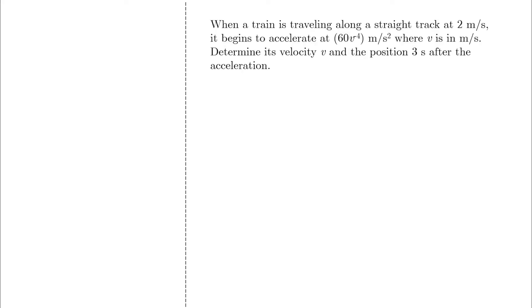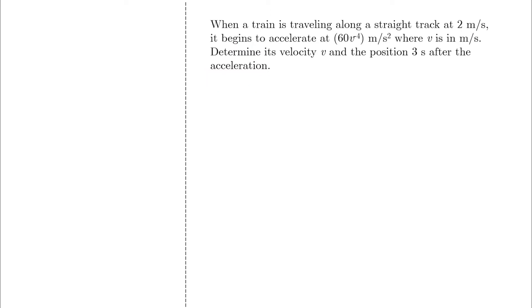In this question, when a train traveling at 2 meters per second begins to accelerate — this begins at t0 equals 0, v0 equals 2 meters per second, and this is our initial condition. It begins to accelerate at a, which is a function of v, and we need to determine the velocity and position three seconds after the acceleration.